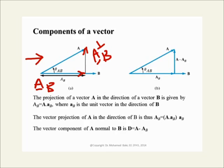How do you calculate these vectors? We already discussed this in some examples. You have to get first a unit vector in the direction of B, then take the dot product between the vector A and this unit vector. This gives you the scalar projection of A in the direction of B. If this number turns out to be negative, it simply means that A and B make an angle greater than 90 degrees.